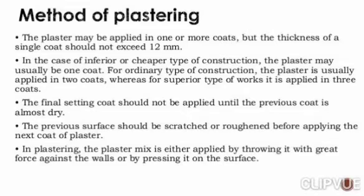Method of plastering: the plaster may be applied in one or more coats, but the thickness of a single coat should not exceed 12 mm. In the case of inferior or cheaper type of construction, the plaster may usually be one coat. For ordinary type of construction, the plaster is usually applied in two coats, whereas for superior type of works, it is applied in three coats. The final setting coat should not be applied until the previous coat is almost dry. The previous surface should be scratched or roughened before applying the next coat of plaster.